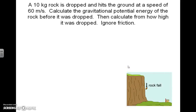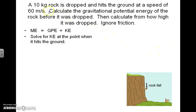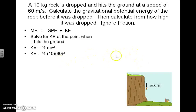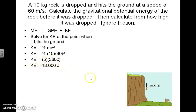The next problem: a 10 kilogram rock is dropped and hits the ground at a speed of 60 meters per second. We need to calculate the gravitational potential energy before it was dropped and how high it was dropped from, ignoring friction. Since we're given mass and velocity, we can solve for kinetic energy: KE = 0.5 × 10 × 60² = 0.5 × 10 × 3,600 = 18,000 joules.